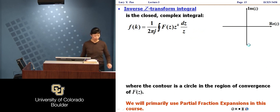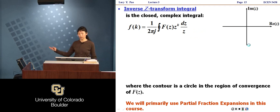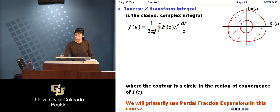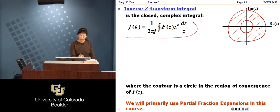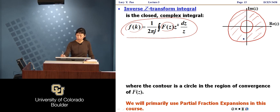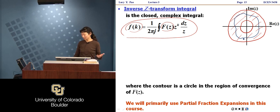You can also compute the inverse Z transform using the inverse Z transform integral — a closed complex contour integral. However, it tends to be really complicated to evaluate, and as engineers we essentially never compute it directly. We always use partial fraction expansion instead. The contour is any closed contour inside the region of convergence.